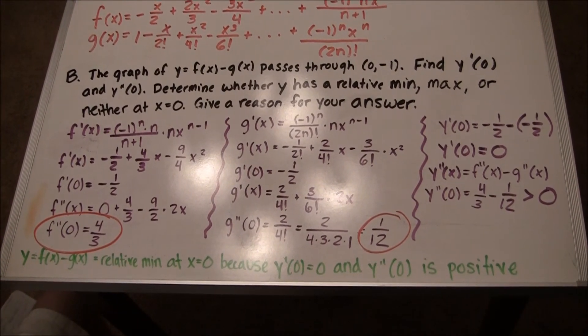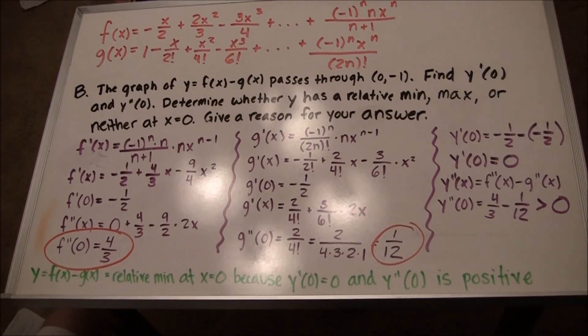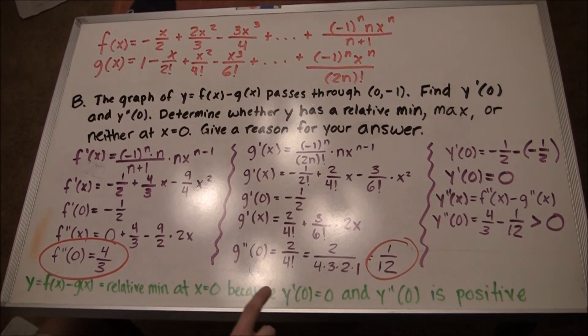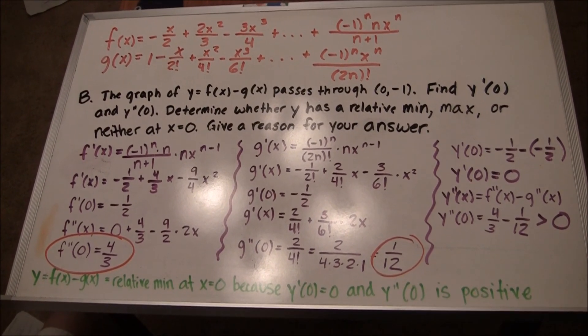The first point comes from finding y prime of 0. The second, finding y double prime of 0. The third, coming to a conclusion. And the fourth, having proper reasoning.